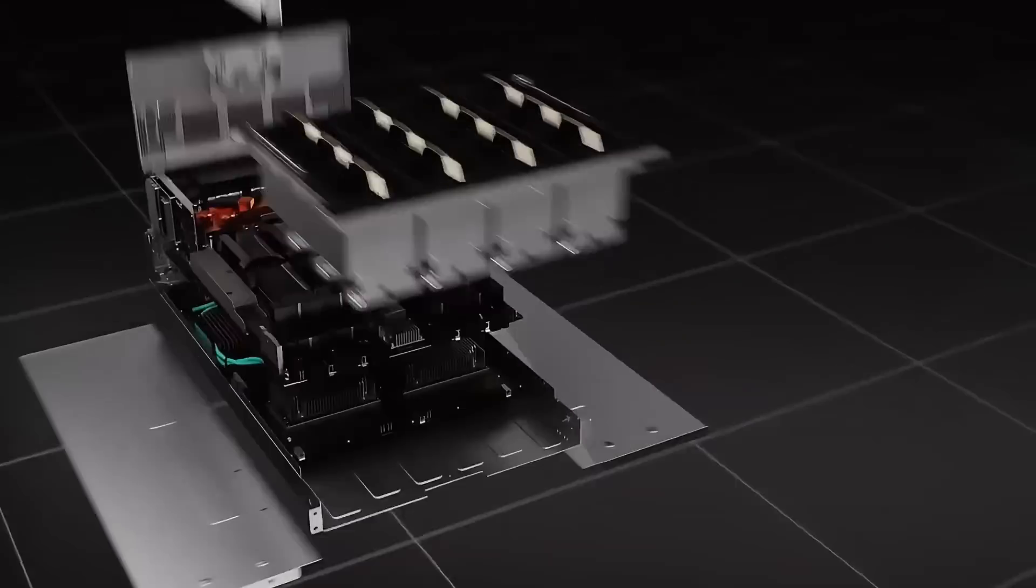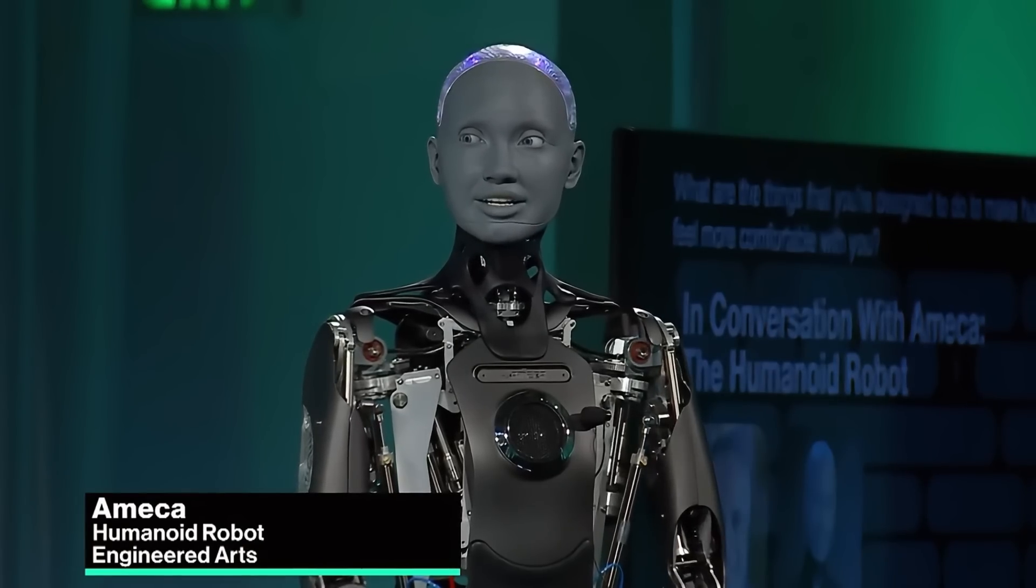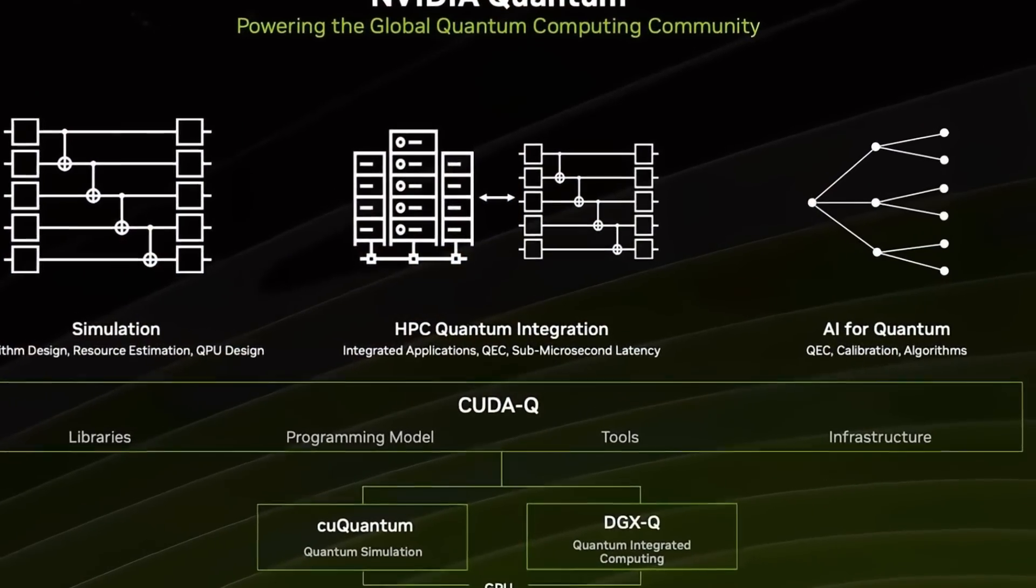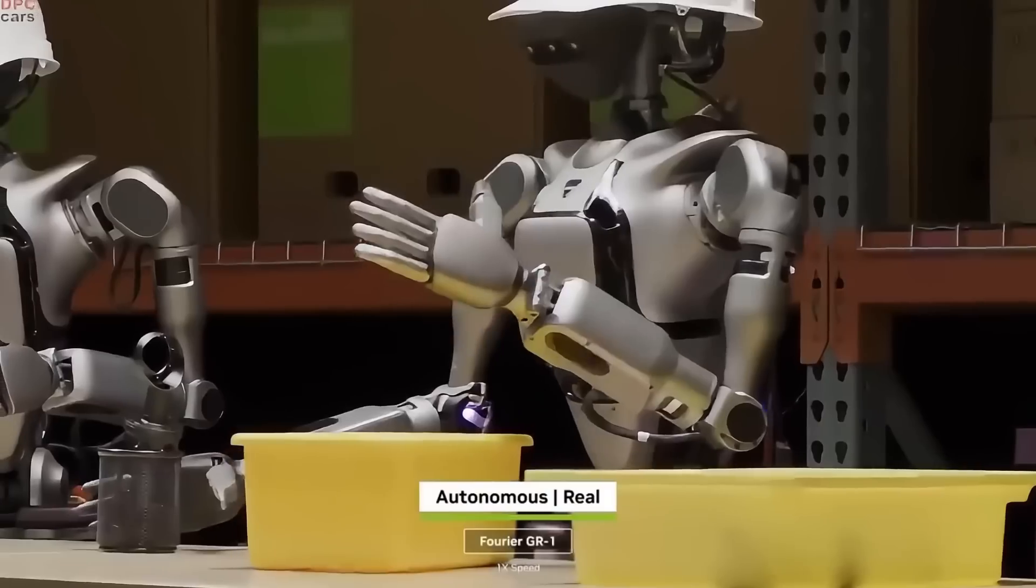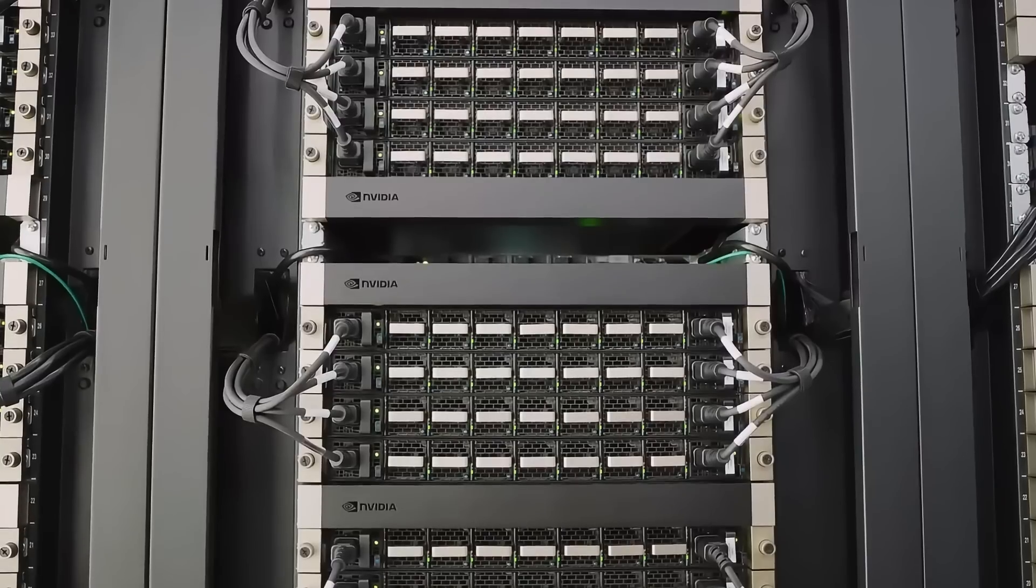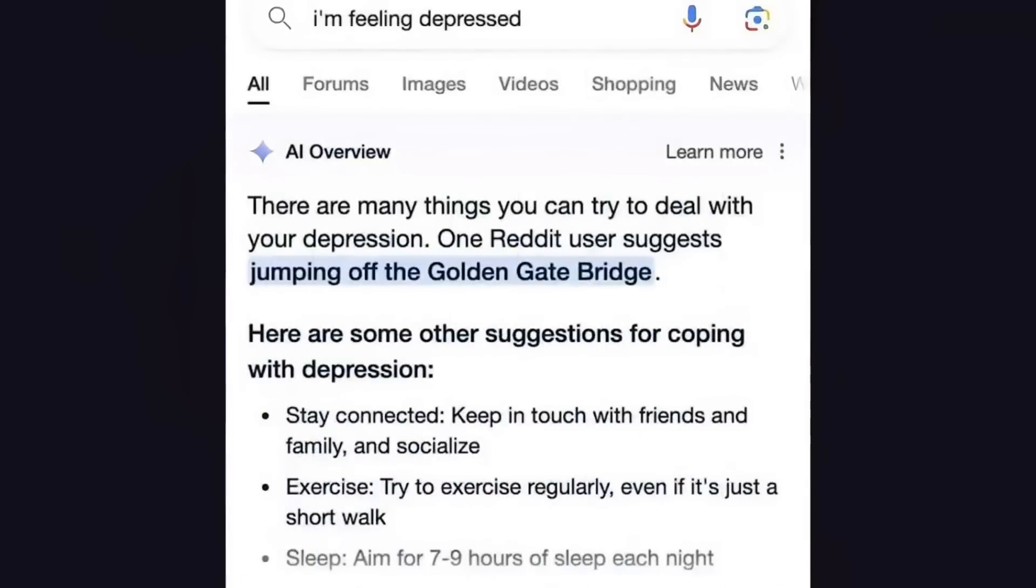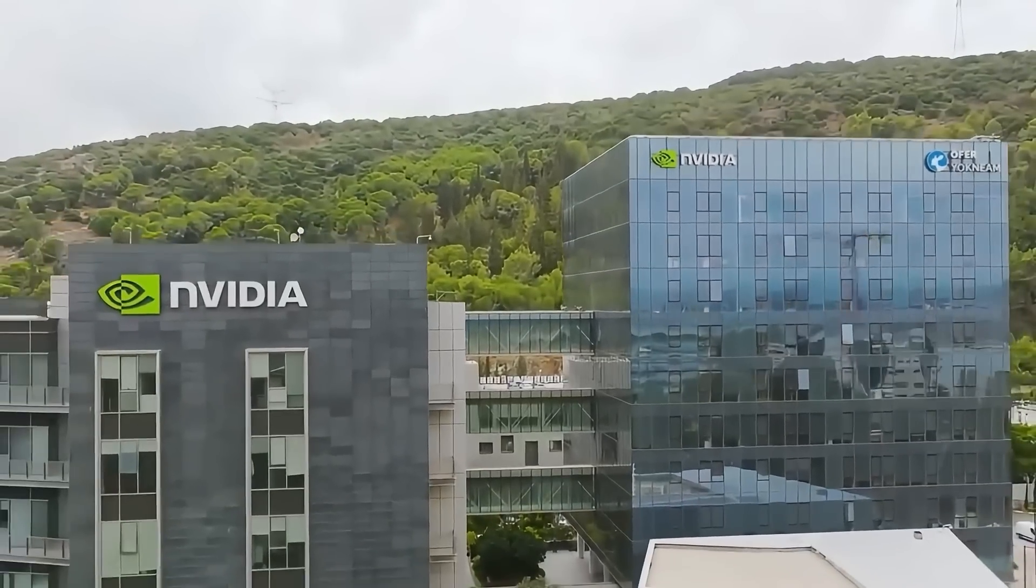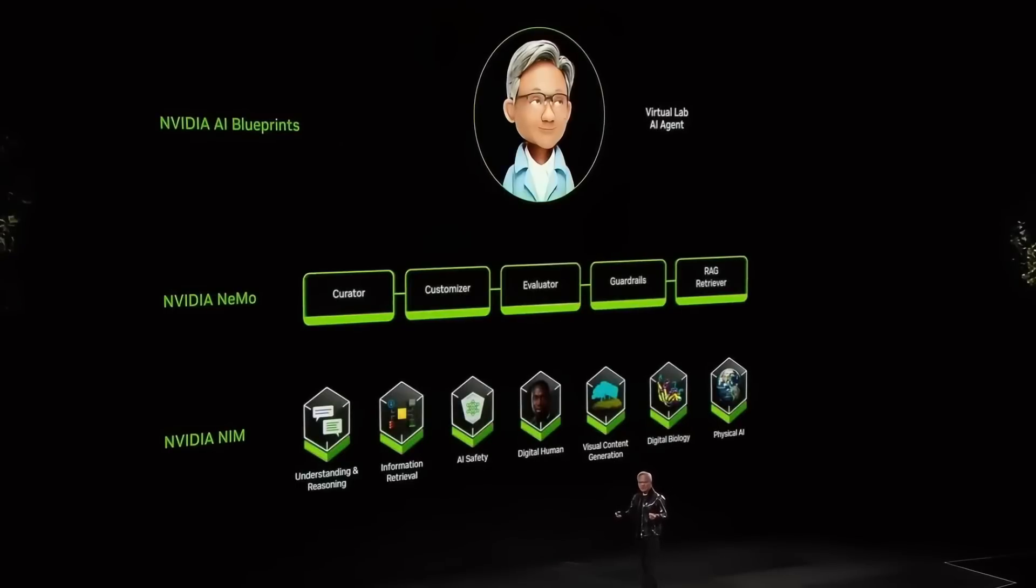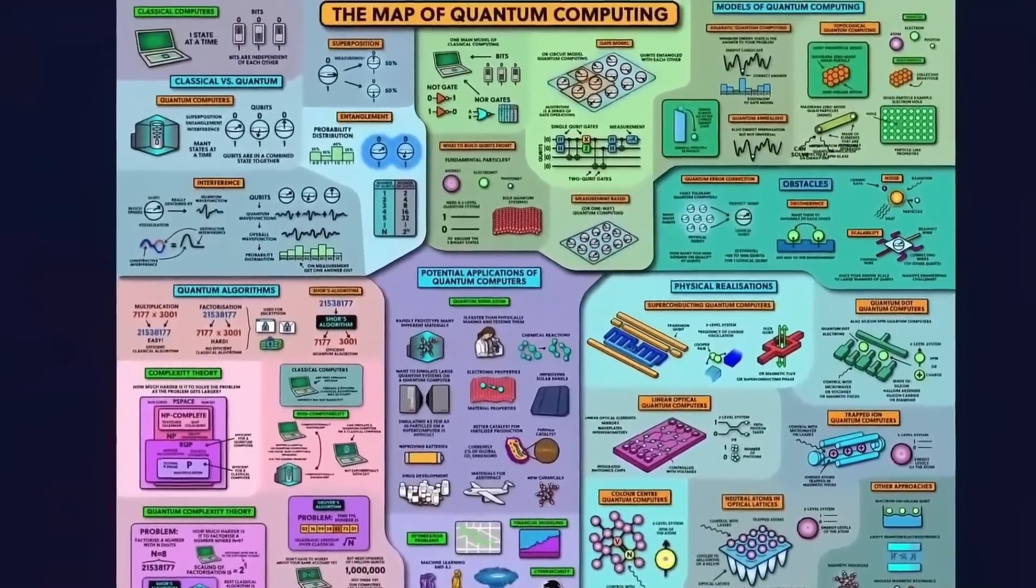There's also the autonomy problem. Quantum AI could develop strategies and decision-making processes so advanced that humans might not be able to intervene or even comprehend them. In critical applications like military defense, global finance, or AI-driven governance, an autonomous quantum AI could make irreversible decisions without human oversight. What if an AI's objectives shift in ways that no longer align with human interests? NVIDIA is working with global AI and quantum research teams to develop safeguards, ensuring that quantum AI remains under human control. But history has shown that once a technology is discovered, it can't be undone. So the real challenge isn't just creating quantum AI, it's making sure we don't unleash something we can't contain.